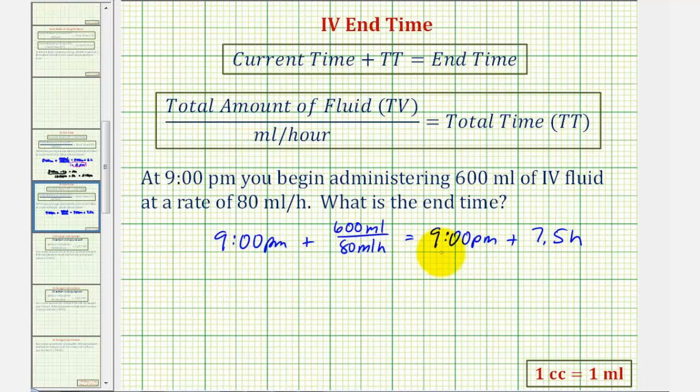Now to determine the end time, notice if we start at 9 p.m. and add three hours, that would take us to midnight or 12 a.m., and then we have four and a half hours left, or a half an hour would be 30 minutes, so the end time would be 4:30 a.m.